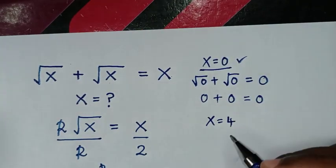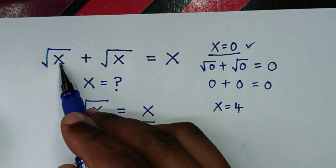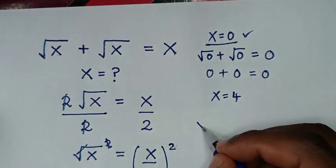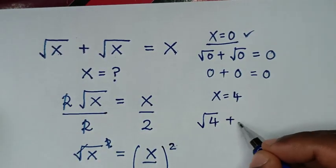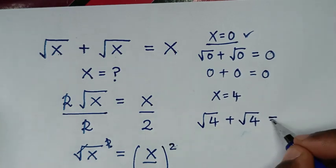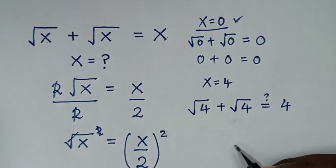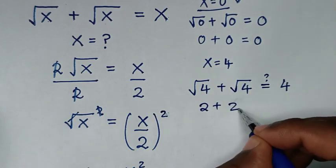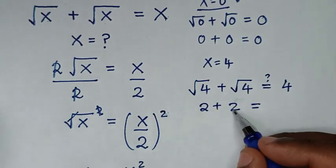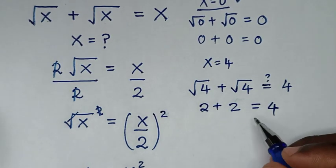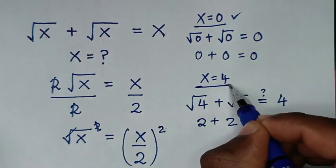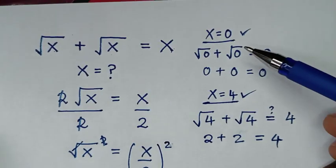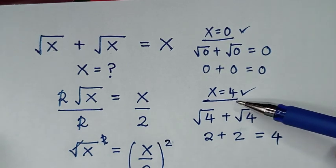Now let's check for x equal to 4. We substitute 4: square root of 4 plus square root of 4 equals 4. Since square root of 4 is 2, we get 2 plus 2 is equal to 4. This is true, so x equals 4 is also correct. Therefore, the values of x are 0 and 4.